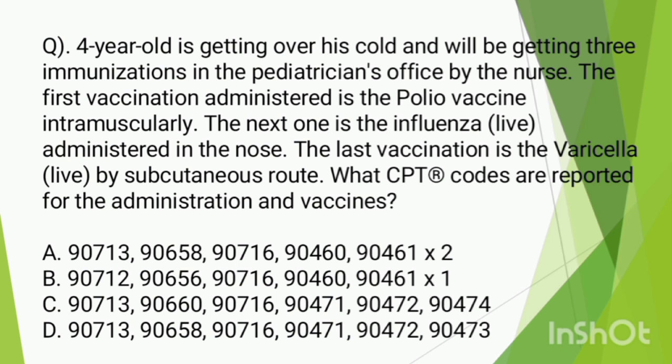Code 90474 description: immunization administration by intranasal or oral route, each additional vaccine, single or combination vaccine or toxoids, listed separately, additional code for the primary procedure. So the influenza nasal vaccine uses 90474. That is correct.